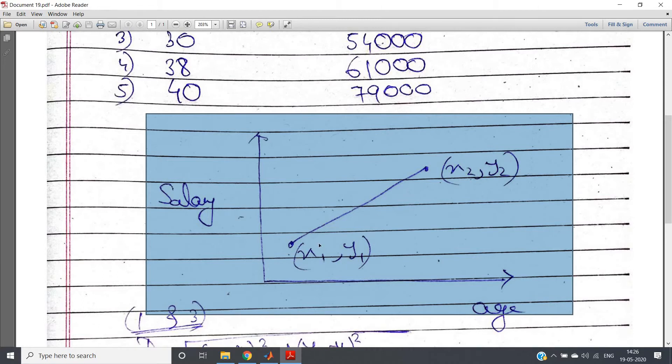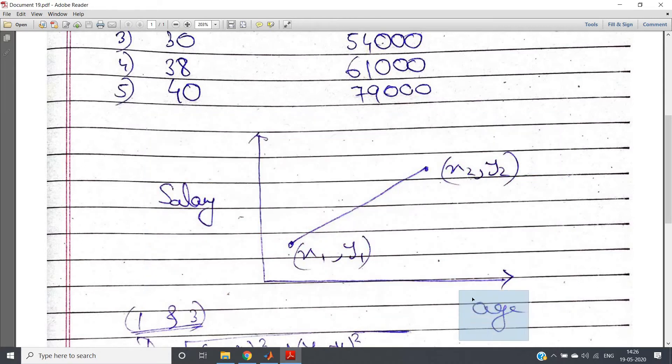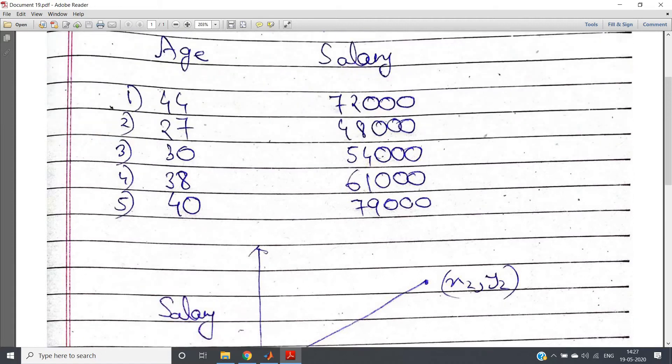Suppose Euclidean distance. X-axis is age, Y-axis is salary. Between these two points, x1 and x2, the distance we have to calculate. Now as the age is very less compared to salary, eventually what will happen: the effect of age on the overall system will become very less. Salary will be the dominating factor.